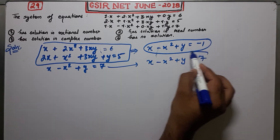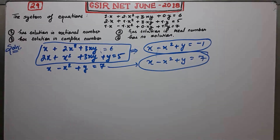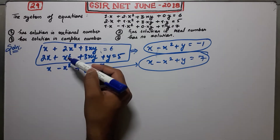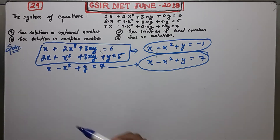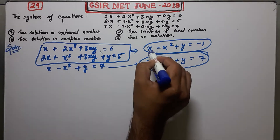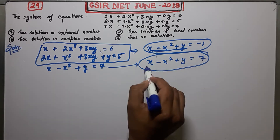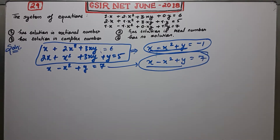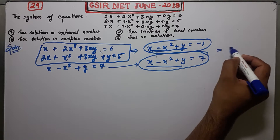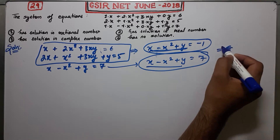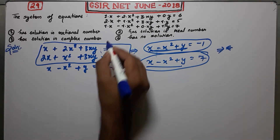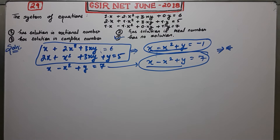This is a contradiction. I was trying to find a solution, but after subtracting the first from the second I get this expression equal to minus 1, while the third equation gives the same expression equal to 7. The same quantity has two different values in the same system — that is not possible. Therefore, there is no solution.